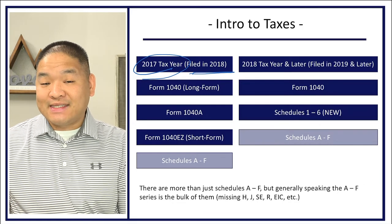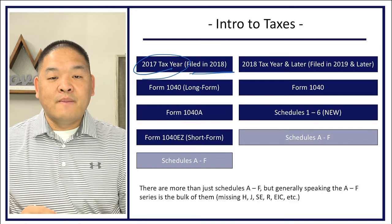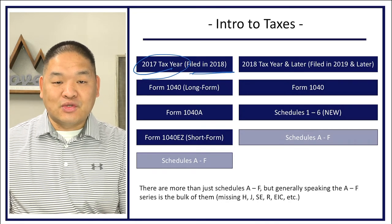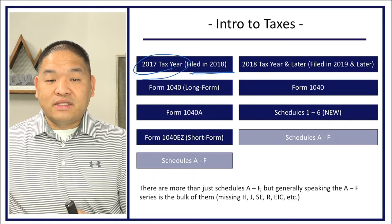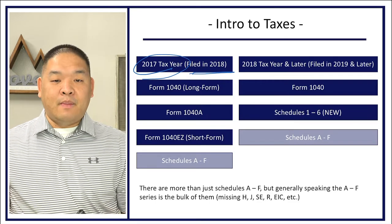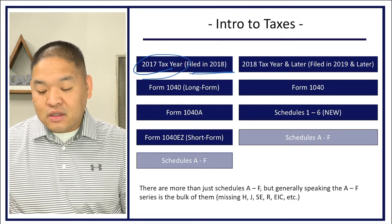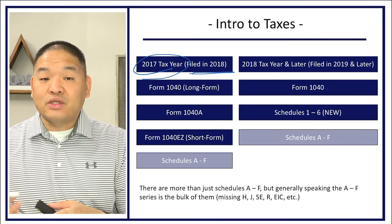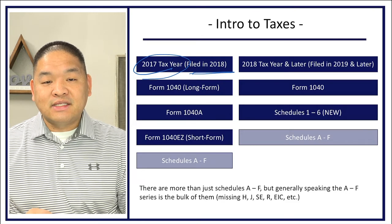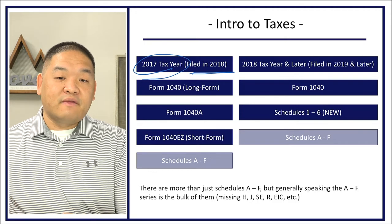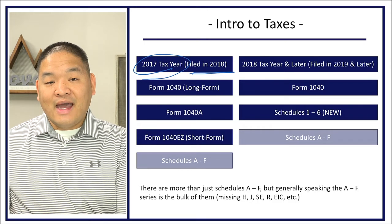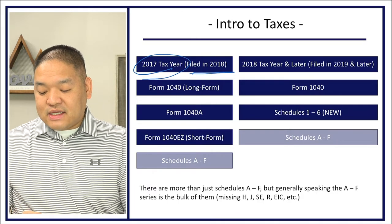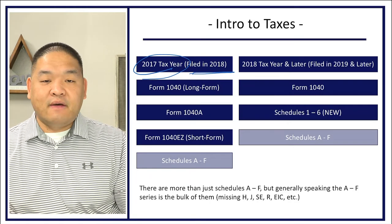These new schedules are Schedules 1 through 6. They aren't entirely new — they just replace the lines that were removed from the old 1040 form and placed on these new schedules. We still also have Schedules A through F. So not only did the forms become more condensed, we now actually have more schedules. However, for the mass majority of taxpayers, the 1040 could be the only form they need to fill out. Schedules 1 and 6 will be important for some taxpayers, and you'll see that in this section. So we now have the 1040, Schedules 1 through 6, and Schedules A through F.